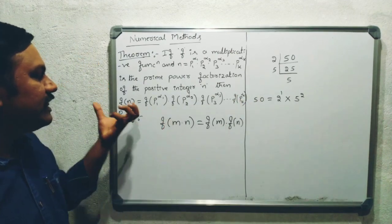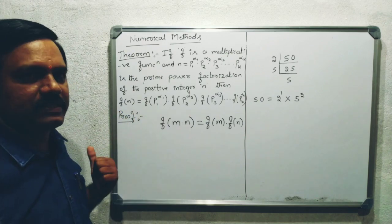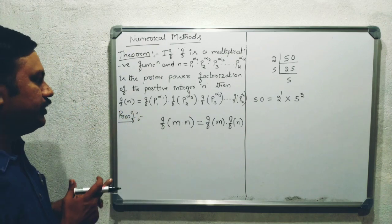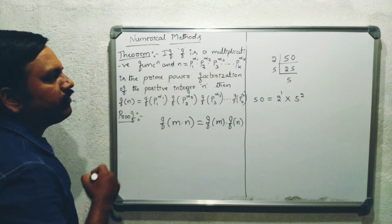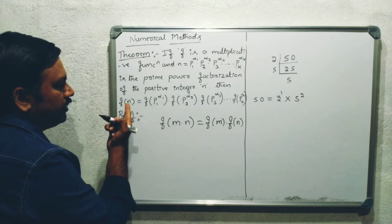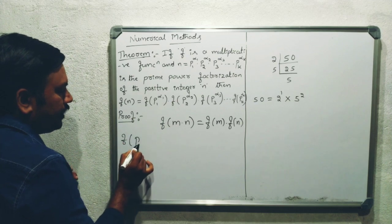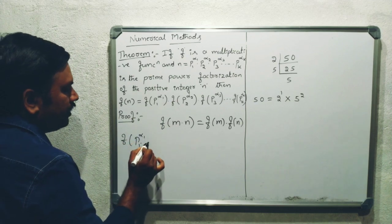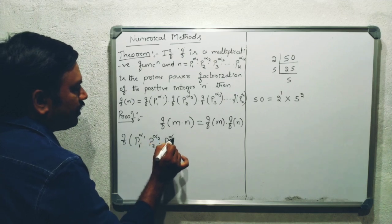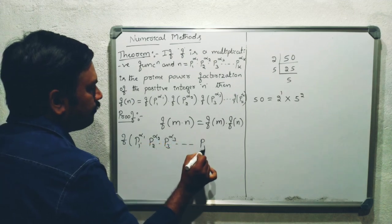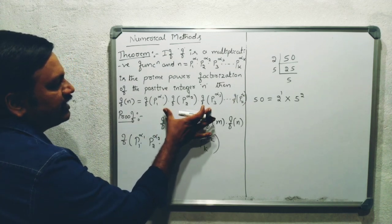Then, this multiplicative function f of n can be written in terms of its prime power factors: n equals p1 to the power of alpha 1, into p2 to the power of alpha 2, into p3 to the power of alpha 3, and so on up to pk to the power of alpha k.